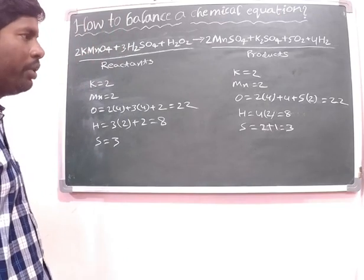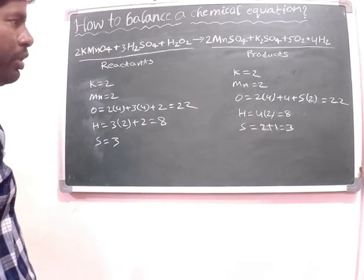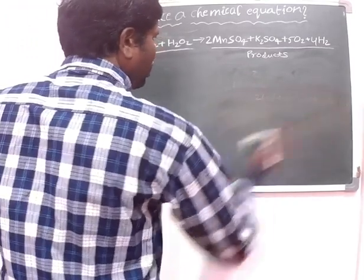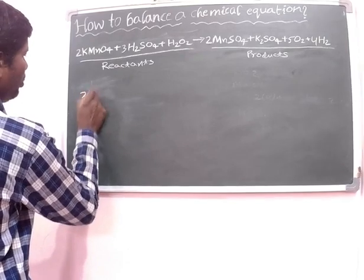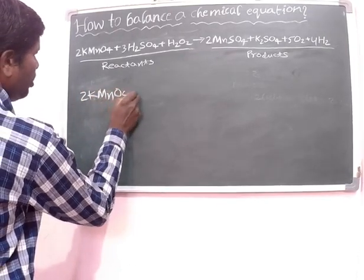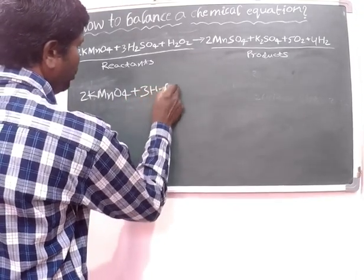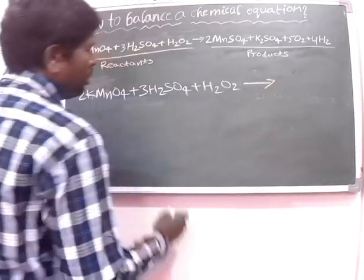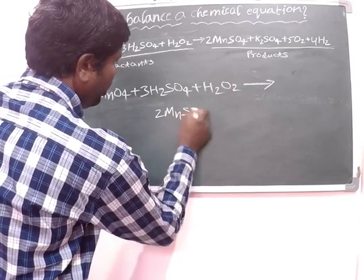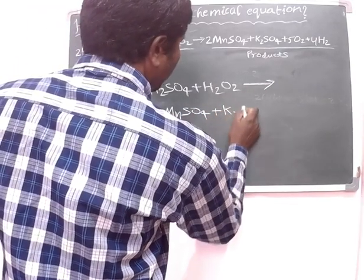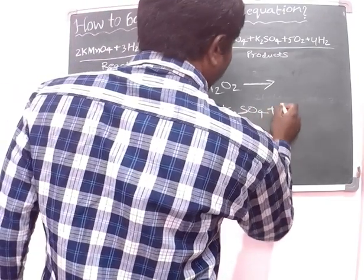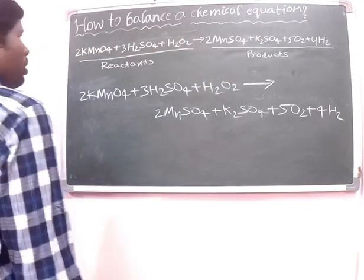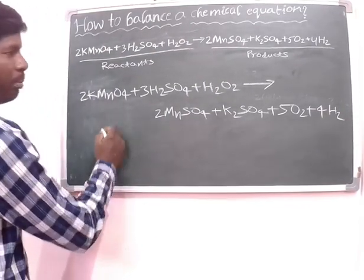Now the number of atoms are balanced on both sides. This equation is balanced. Therefore: 2 KMnO4 plus 3 H2SO4 plus H2O2 gives us 2 MnSO4 plus K2SO4 plus 5 O2 plus 4 H2. This is the balanced chemical equation.